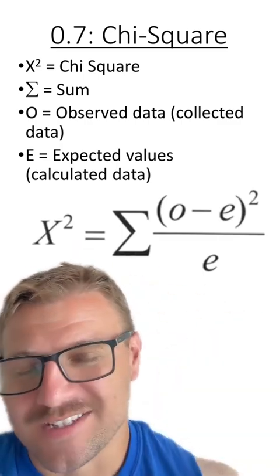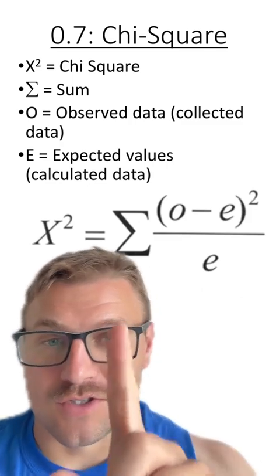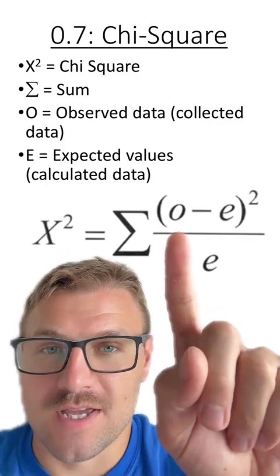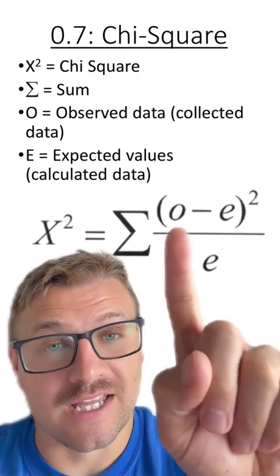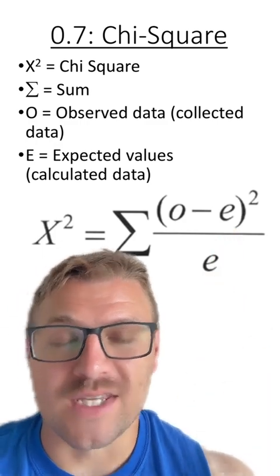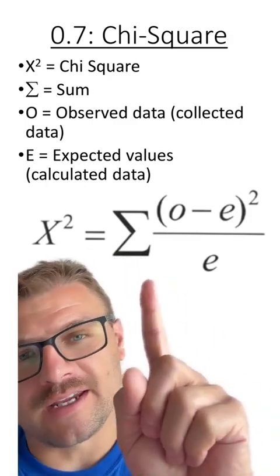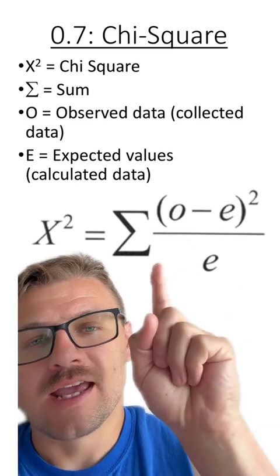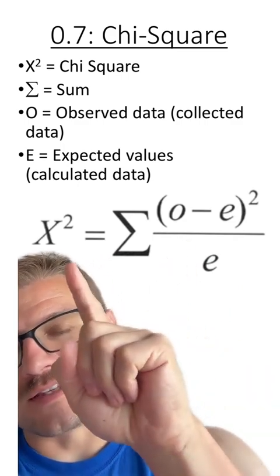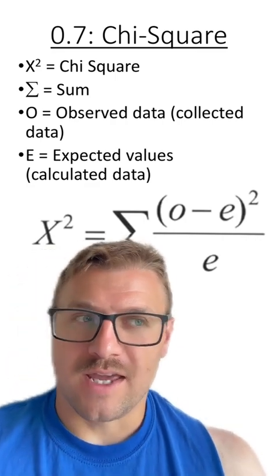This big E, as I like to call it, or the summation sign, just means that we're going to add up all of the values to the right here. The O represents the observed data - this is what we collect. And these E's represent expected values - this is what we calculate before the experiment. So when we get done calculating everything on this side, that number represents the chi-square. We use this chi-square value on something called a chi-square chart.